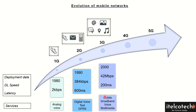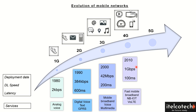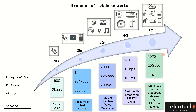In 3G, we saw downlink speeds of up to 42 Mbps with a latency of 200 milliseconds, introducing use cases such as mobile broadband and multimedia. In 4G, new emerging use cases like NBIT appeared with faster mobile broadband at speeds up to 1 Gbps and latency as low as 100 milliseconds. In 5G, there are many more new use cases beyond mobile broadband, including ultra-reliable low-latency services and massive machine-to-machine communication, which have not been seen or leveraged in previous legacy technologies.